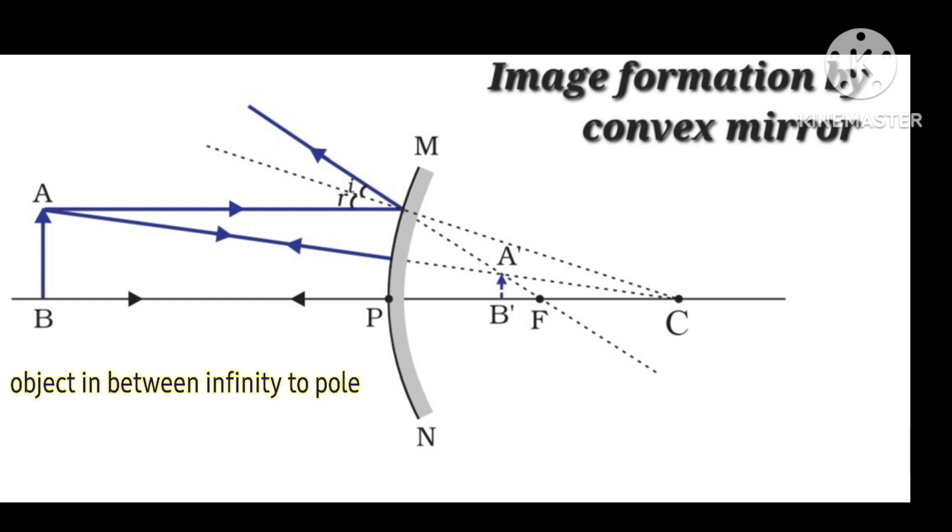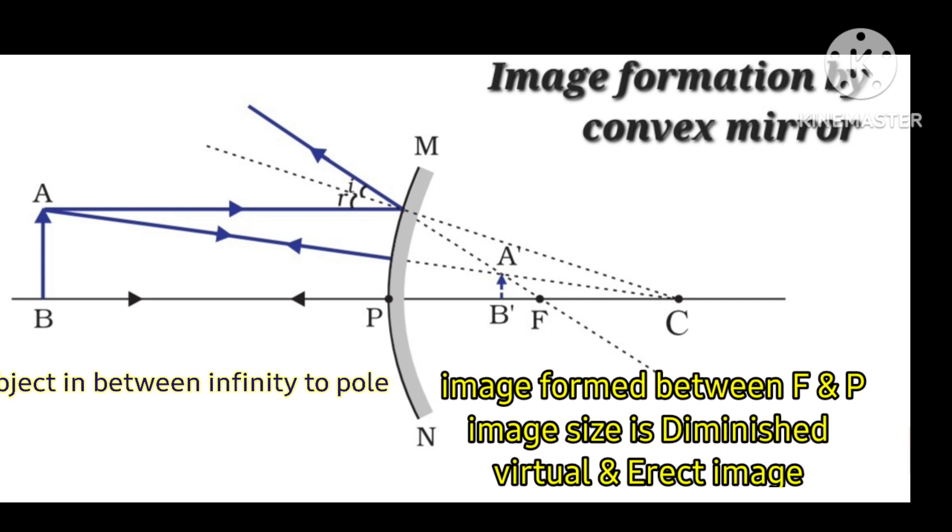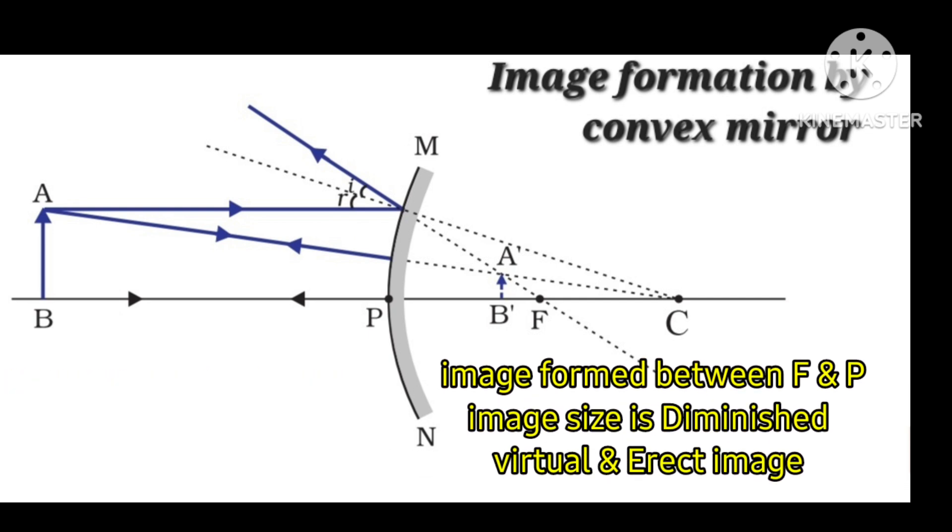Let me conclude the ray diagram. When the object is between infinity and the pole, the image forms between the pole and focus. The image is diminished, virtual, and erect.